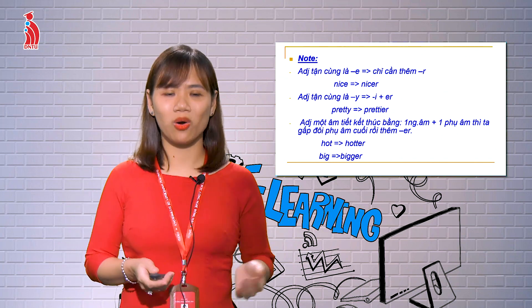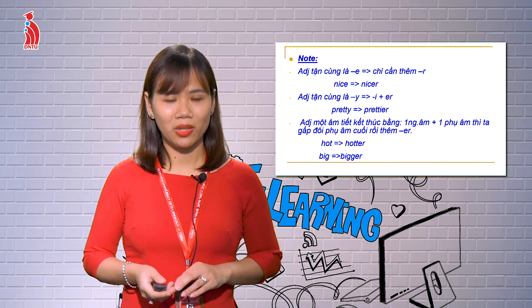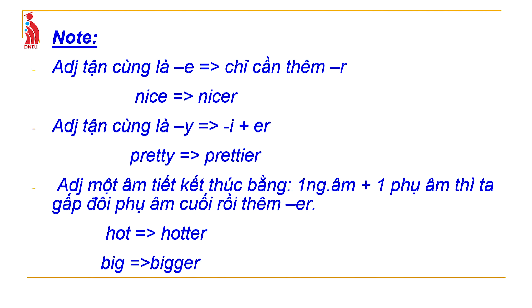Some notes: Adjectives ending in -e just add -r (e.g., nice → nicer). Adjectives ending in -y change -y to -i then add -er (e.g., pretty → prettier). One-syllable adjectives ending in a vowel + consonant double the final consonant before adding -er (e.g., hot → hotter, big → bigger).